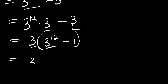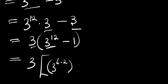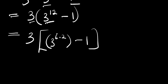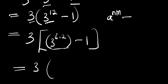Now we take the 3 outside and rewrite 3^12 as 3^(6×2), because 6 times 2 is 12. We have 3 times (3^(6×2) minus 1). We apply the identity a^(n×m) equals (a^n)^m.